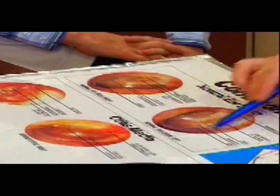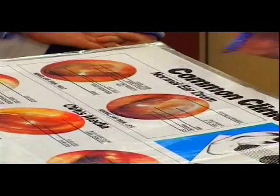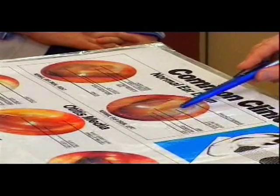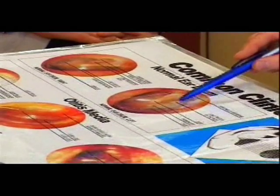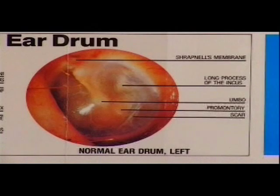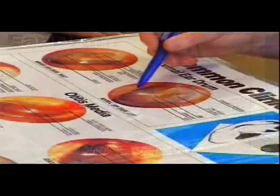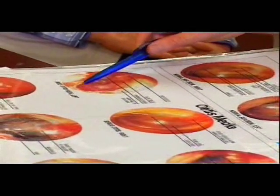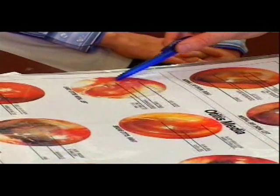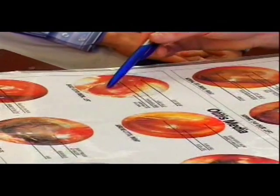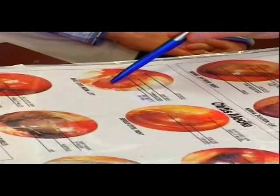This is the other ear, the left ear — essentially the same. There's a good light reflex, no signs of inflammation, and you can see structures deep to the tympanic membrane — the middle ear structures which are normal and healthy. There's a little bit of scarring of the eardrum there. Moving on to other pictures, you can see that the sense of transparency is lost — you can't see the normal structures through the tympanic membrane.